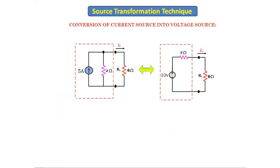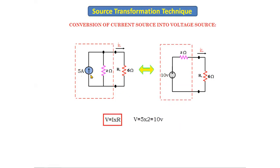How do we get 10 volts and 2 ohms? There is no change in the resistor value when converting from one source to another. To get the voltage, we use Ohm's law: V = I × R. Here, I = 5 amperes and R = 2 ohms, so V = 10 volts.